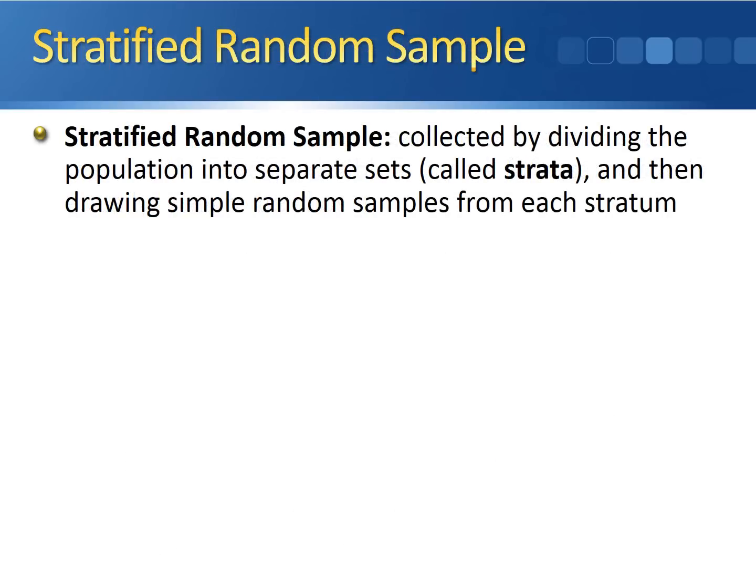A stratified random sample is a sample that's collected by dividing the population into separate sets. These sets are called strata and these strata are completely disjoint from one another. There's absolutely no overlap, so a person who shows up in one stratum cannot show up in another one. At this point we draw simple random samples from each stratum. These strata generally have different characteristics, which is the reason that we're interested in doing a stratified random sample. We want to make sure that every group is represented in our sample.